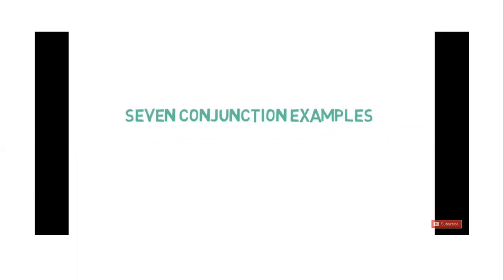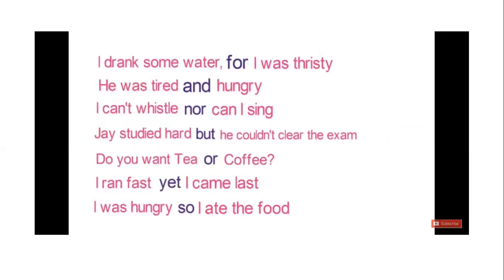There are seven basic conjunction examples. They are: for, and, nor, but, or, yet, so. The ones in blue are the conjunctions. Examples: 'I drank some water for I was thirsty.' 'He was tired and hungry.' 'I can't whistle nor can I sing.' 'Jay studied hard but he couldn't clear the exam.' 'Do you want tea or coffee?' 'I ran fast yet I came last.' 'I was hungry so I ate the food.' Various phrases, clauses, sentences, and words are joined through the help of conjunctions.